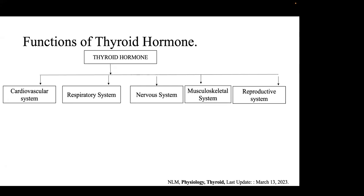Thyroid hormone also helps in thermogenesis. In the cardiovascular system, it acts by increasing the expression of beta receptors, thereby increasing the heart rate, stroke volume, cardiac output, and contractility of the heart. In the respiratory system, it stimulates the respiratory center, increasing respiratory rate and oxygenation, resulting in increased lung perfusion.